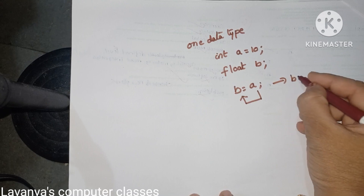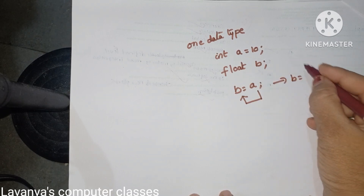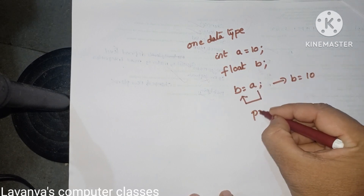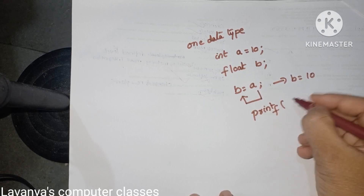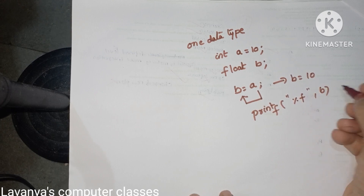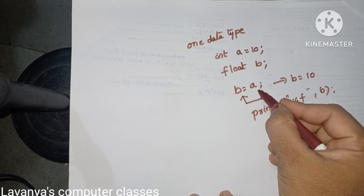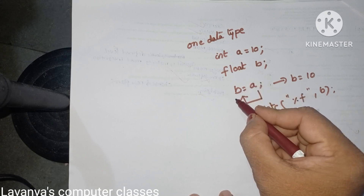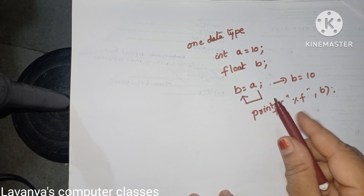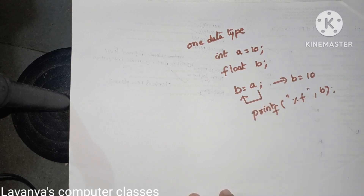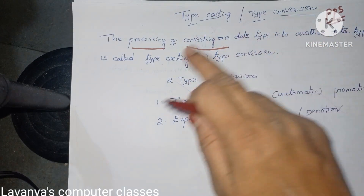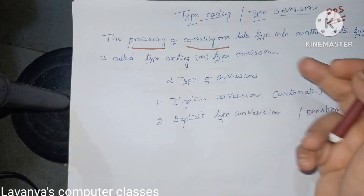After assignment, the value of a is stored into b. Using printf with %f, b's value is printed. Here, a is actually an integer number, and that integer number is stored into a float data type — one data type is converted into another data type. This is called type conversion. The process of converting one data type into another data type is called as typecasting or type conversion.